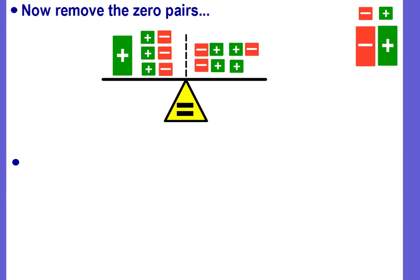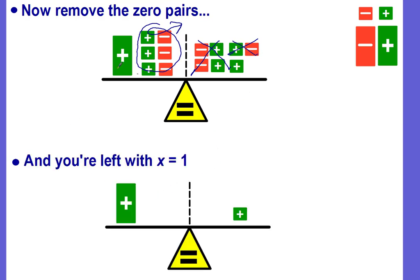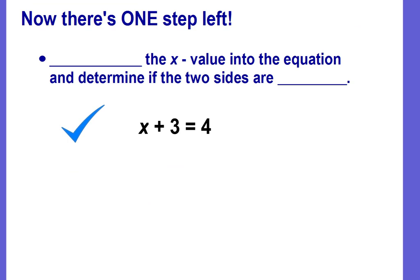And now you're ready to remove the zero pairs. You can loop them and pull them out or you can cross them out. And you're left with x equals one. Now there's just one step left. We need to substitute the x value we just got back into our equation and determine if the two sides are equal. So my equation was x plus three equals four.